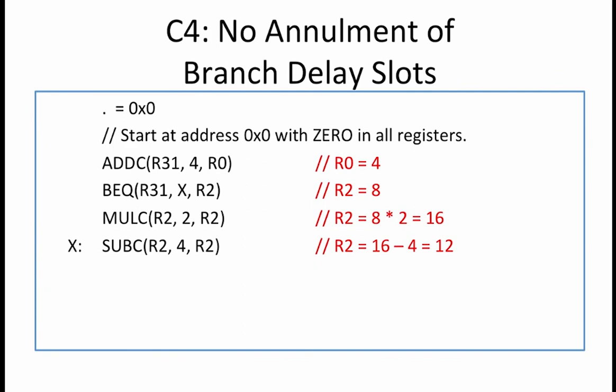The SUBC now uses this value for R2, from which it subtracts 4 to produce R2 equal to 12. The ADD then reads R0 equal to 4 and adds to it R2 equal to 12 to produce R3 equal to 16. Finally, the JUMP jumps to address 16.